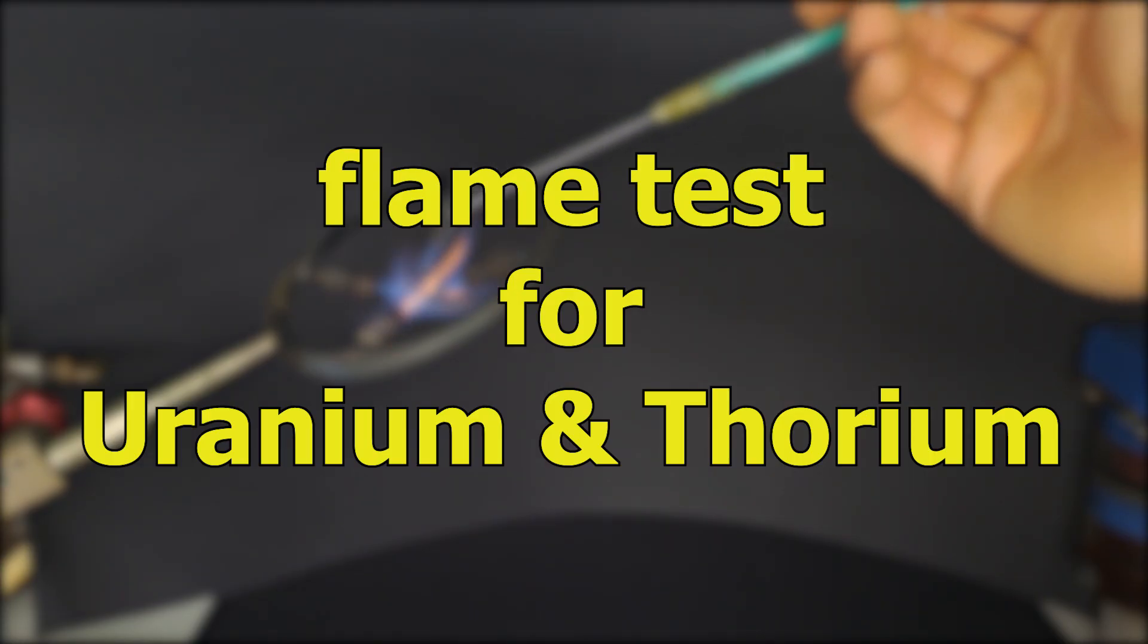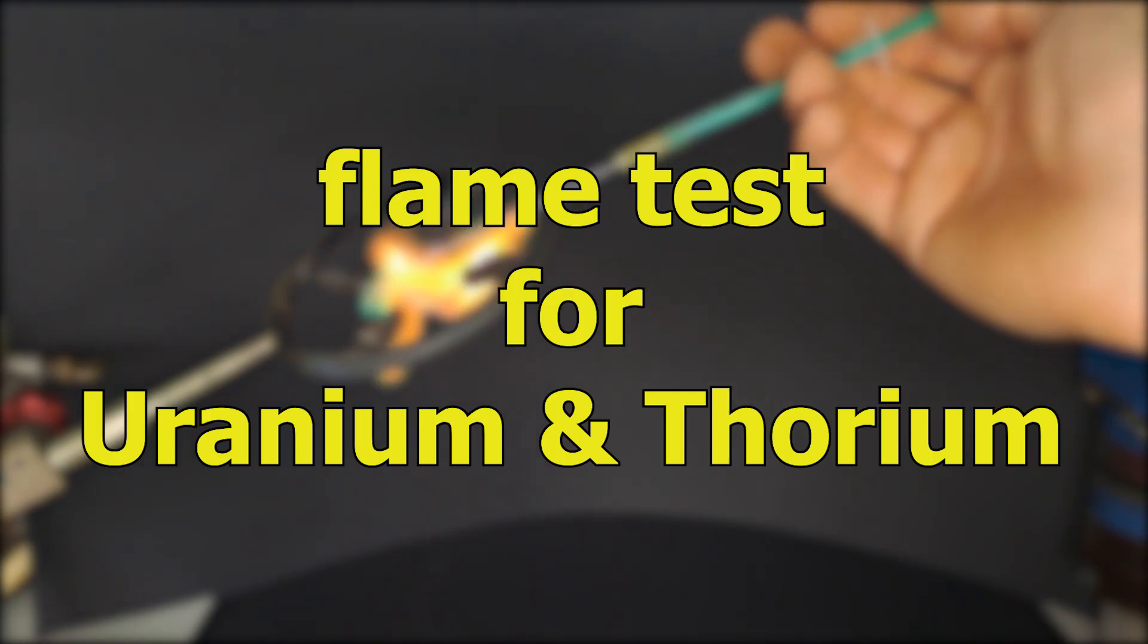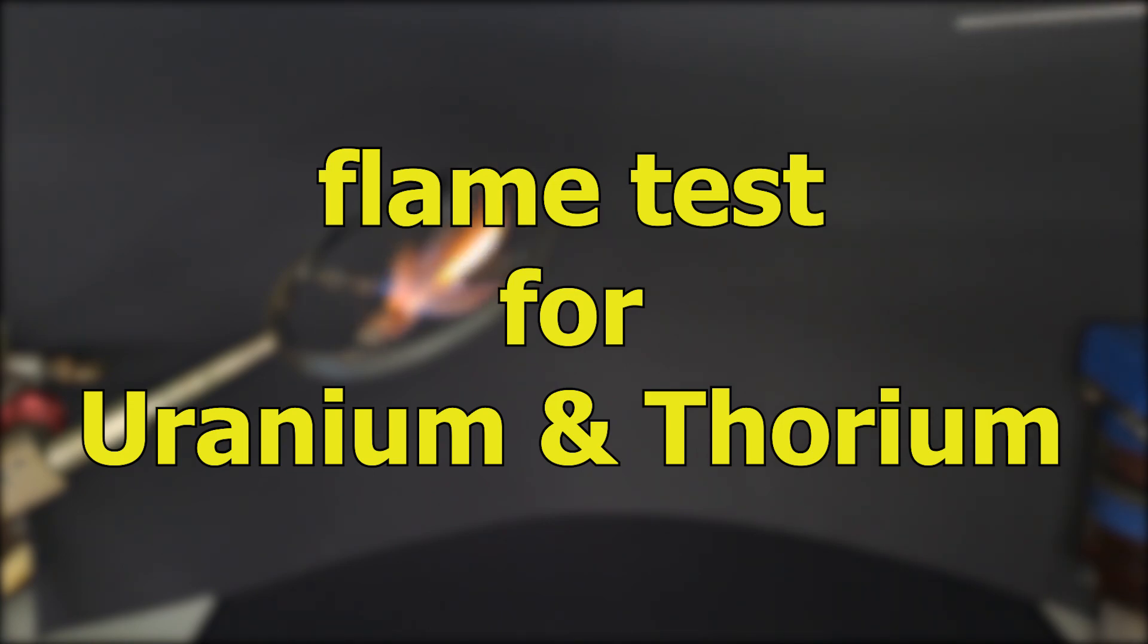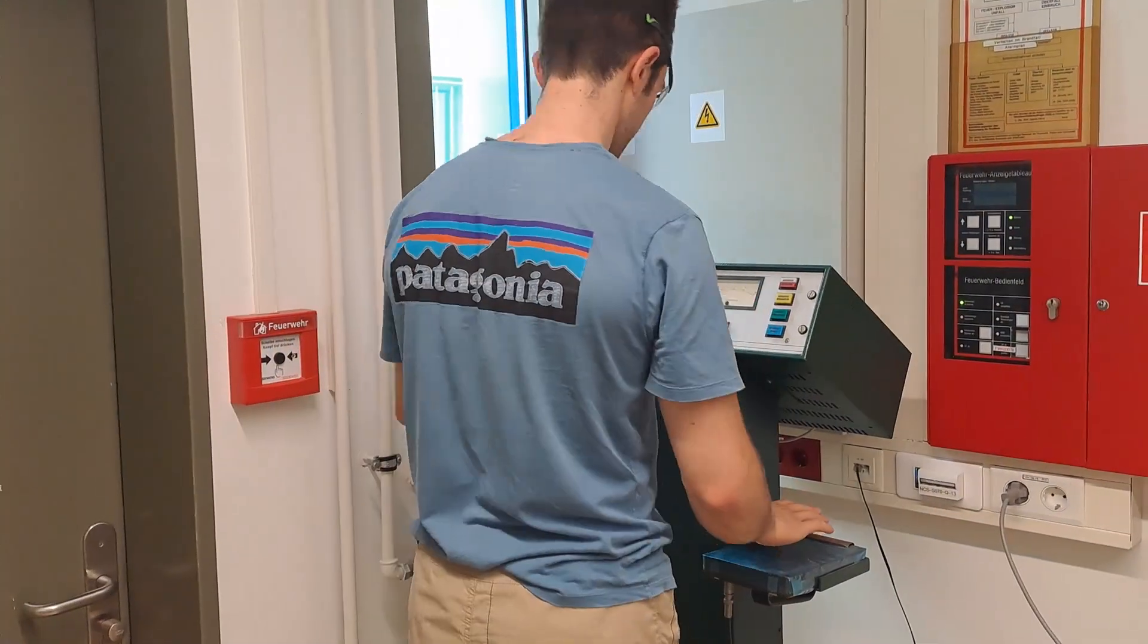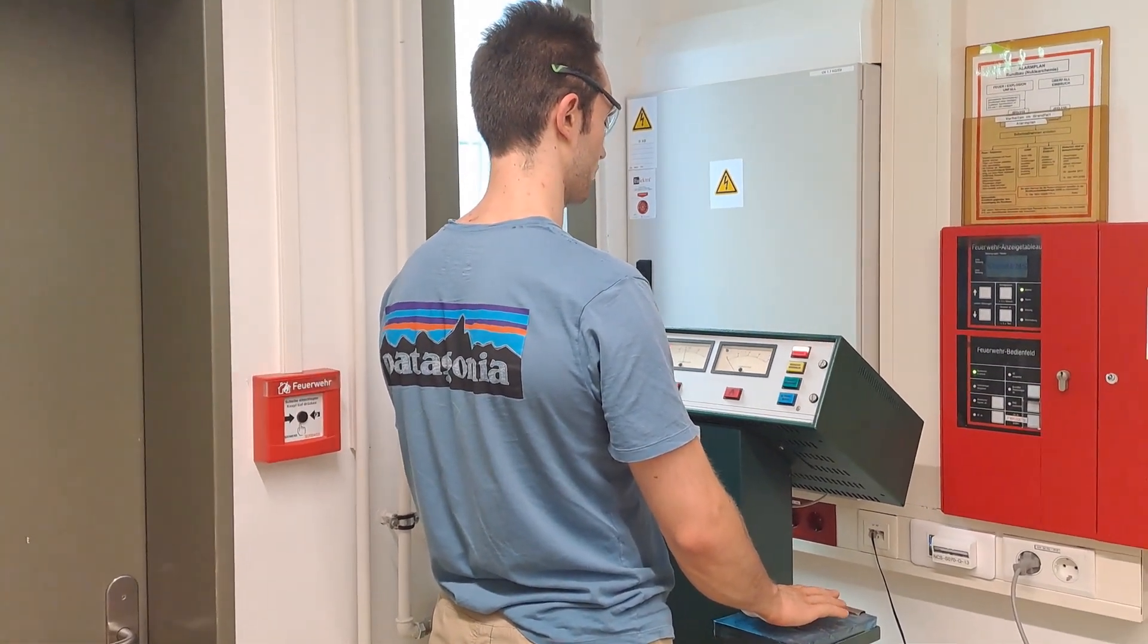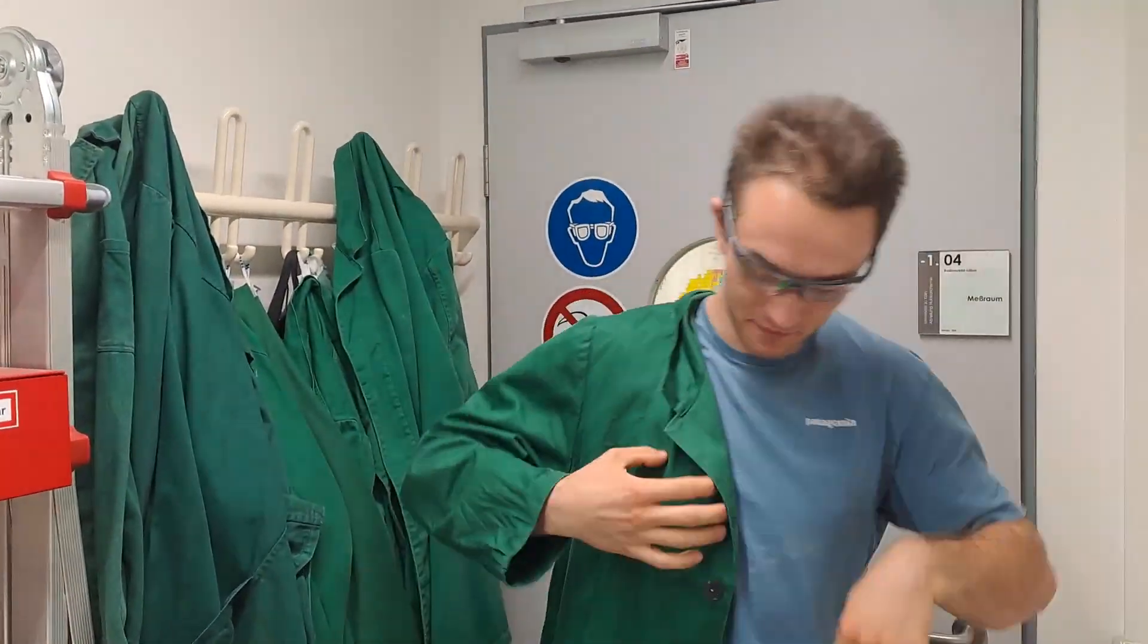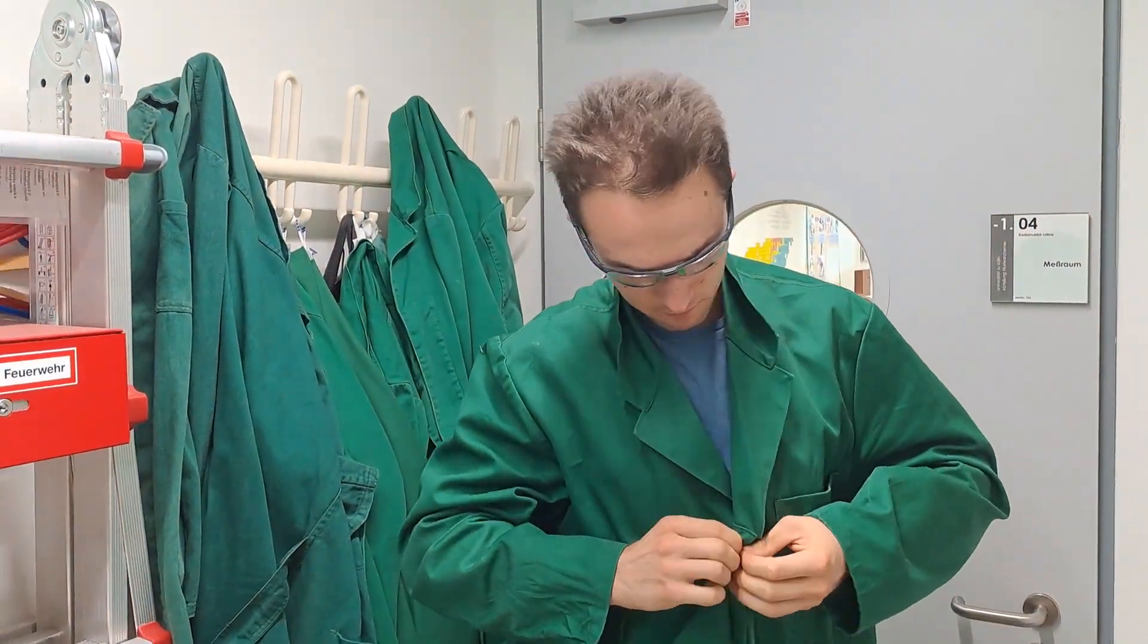I wanted to find out what is the flame color of uranium and thorium. Radium supposedly has a red flame color, but as with much of the basic research on radioactive elements, it's decades old and the quantities they used back then are simply unimaginable.